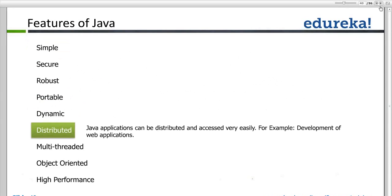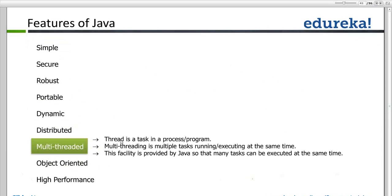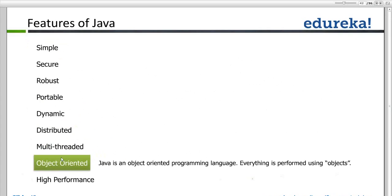Dynamic, distributed, multi-threaded, object-oriented — multi-threading I'm not giving much importance now, because we need to know about threads first to understand multi-threading. We'll study that later along with the multi-threading topic. Object-oriented — Java is an object-oriented programming language. Everything is performed using objects. We should know what an object is, which we will study along with OOPs concepts.